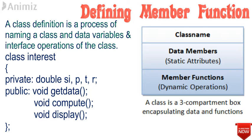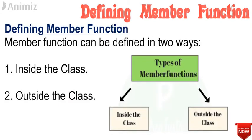There are no restrictions that a class can have only one data type. You can define data members with different data types — for example, SI can be defined as float and PTR as int. In this example, we have defined data members under private and all three member functions under public access specifiers. A class always ends with a semicolon. In C++, member functions can be defined in two places: inside class definition and outside class definition.